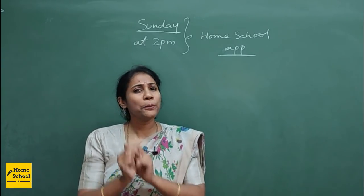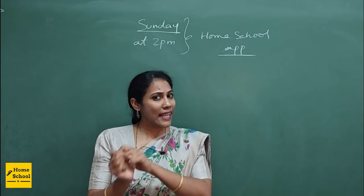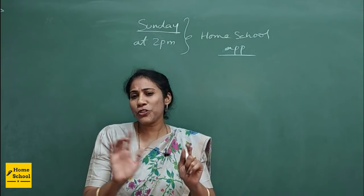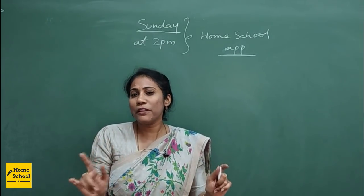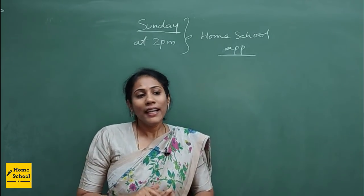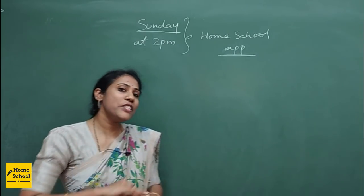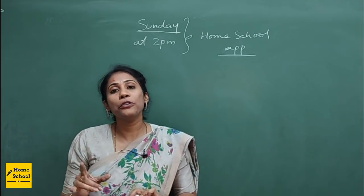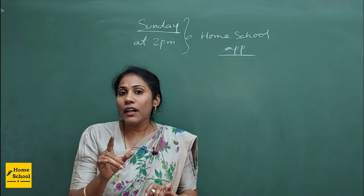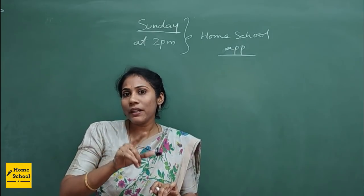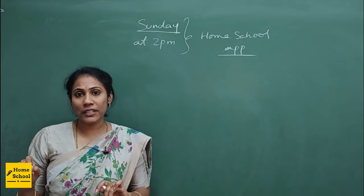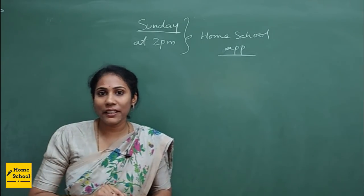Coming to biology, the heredity and evolution chapter is the most difficult chapter for most students. In this chapter, I will give you tricks to remember homologous organs and analogous organs in a better way.